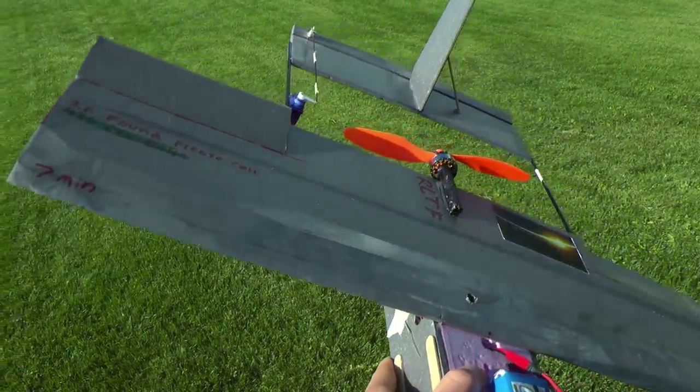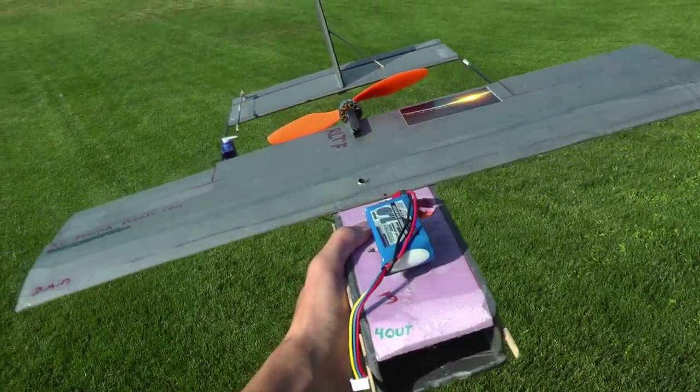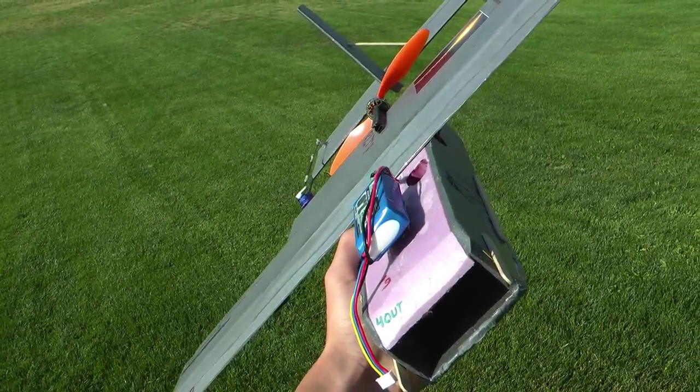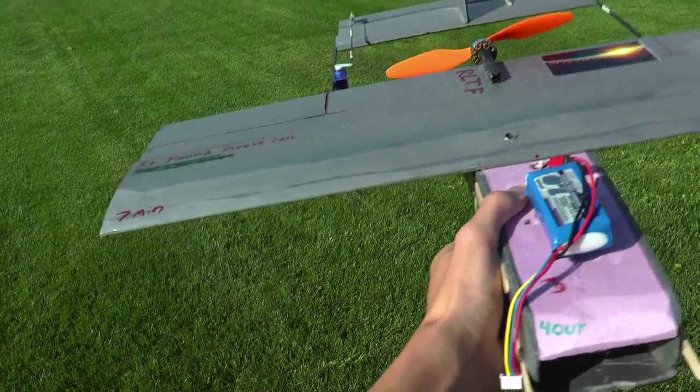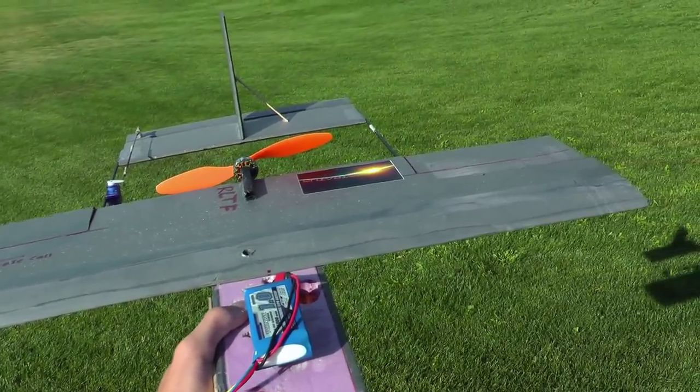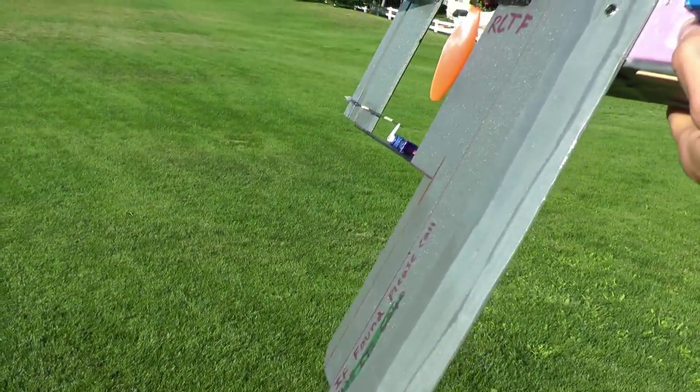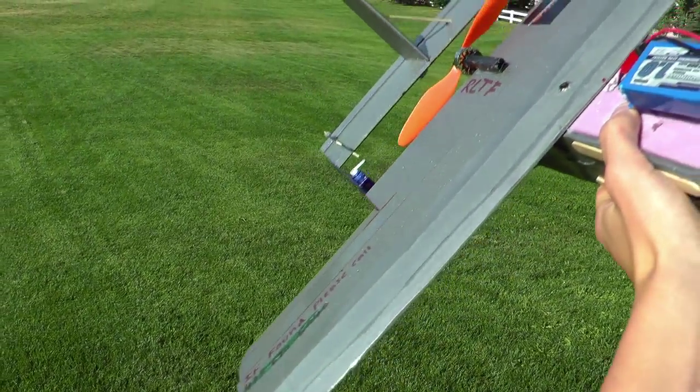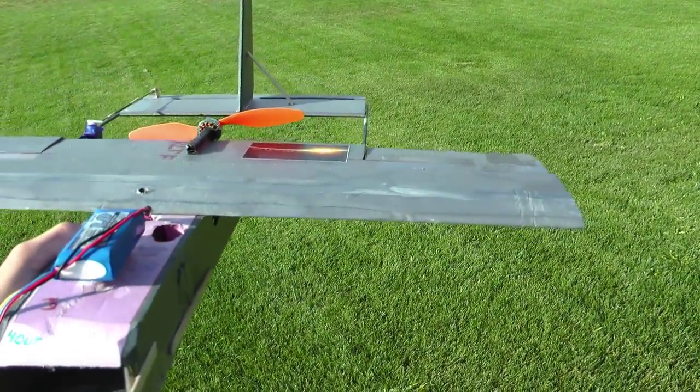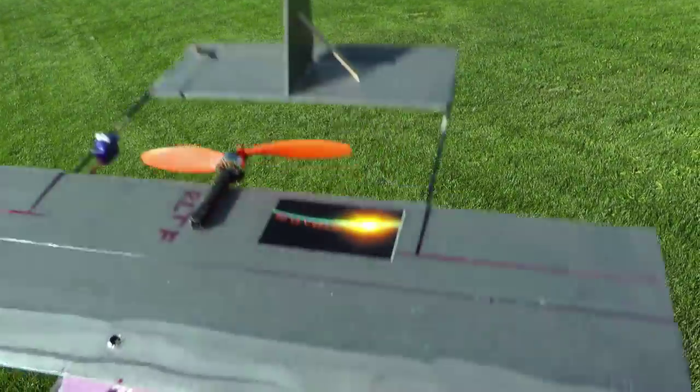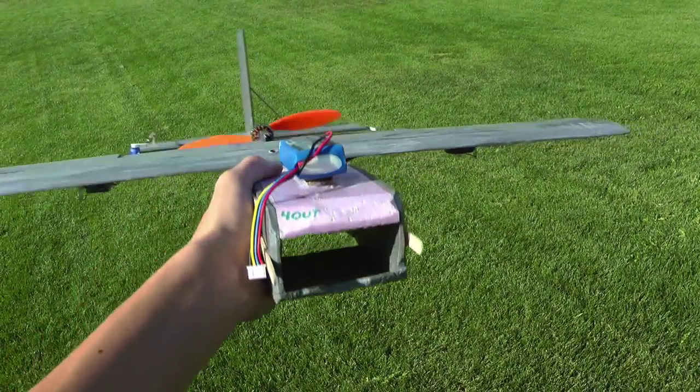But because of the accelerometers, the plane actually knows that it's sideways, so it'll continue to try and correct that until it's back up and level. Then the aileron will go back to normal. Notice when I tilt it, it's trying to correct it. Same with the other side. That's what the accelerometers do. Same with the elevator and rudder, but we don't have rudder.